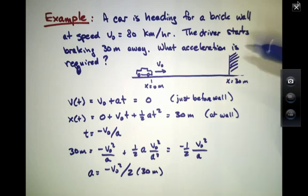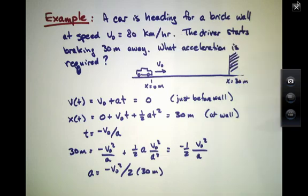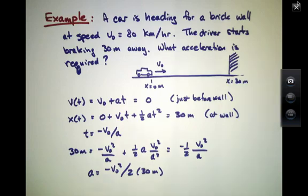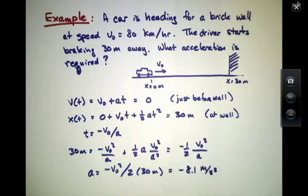If you convert 80 kilometers per hour into meters per second — which you must do — you get a value just over 22 meters per second. Plugging the correct number in, I come up with a value of minus 8.1 meters per second squared.